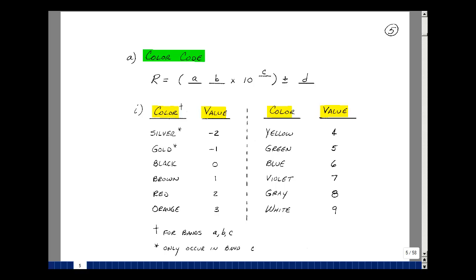For the bands A, B, and C, these are the colors associated with a number. Silver is minus 2, gold is minus 1, black is 0, brown is 1, red is 2, orange is 3.